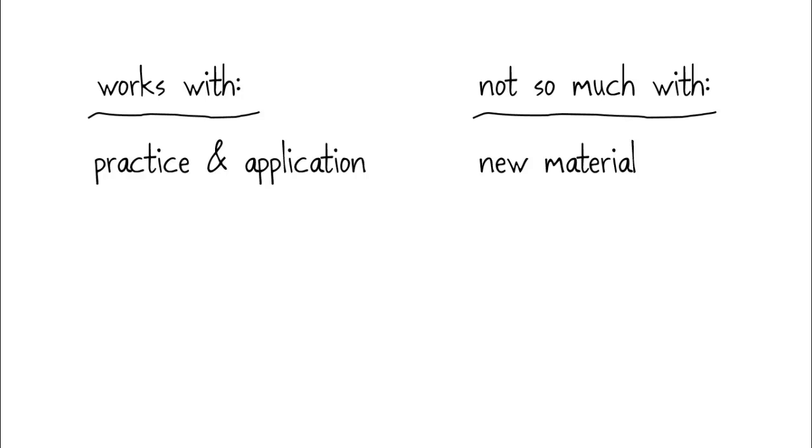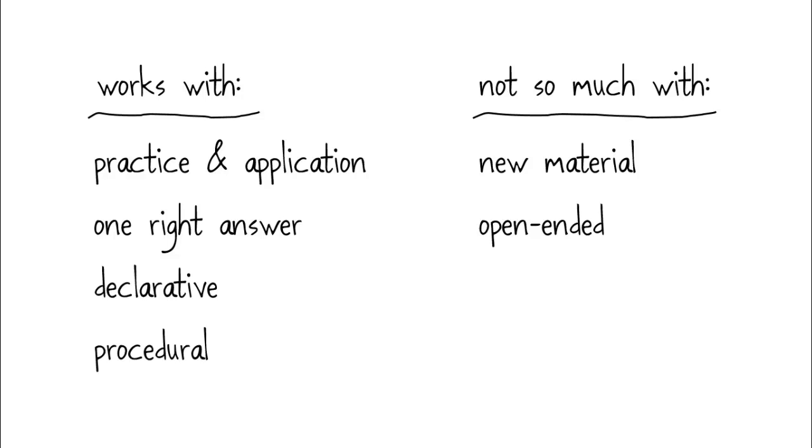Tasks that work well with Reciprocal Learning are those with one right answer, rather than the open-ended kind. What's great about this strategy is that it's effective with both declarative learning, facts and information that students recall, like identifying the different systems of the body, and procedural learning, which develops skills, like being able to solve a geometry proof.